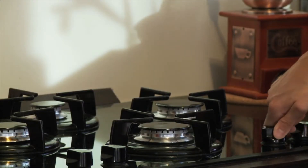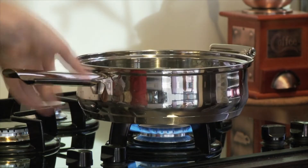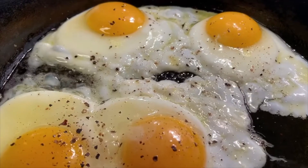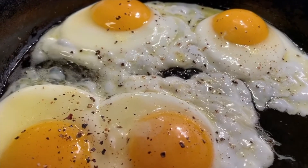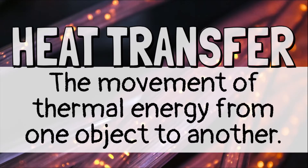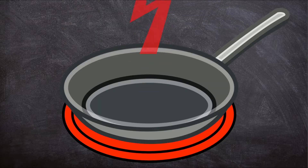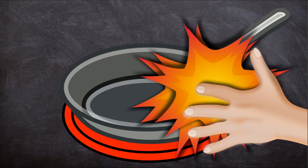If you place a metal pan on the stove and turn it on, the pan gets hot — hot enough to cook an egg. It gets so hot it will even burn your hand if you touch it. Heat transfer is the movement of thermal energy from one object to another. When you place the pan on the hot burner, the heat moves from the burner to the pan. When you touch the hot pan, the heat moves from the pan to your hand.